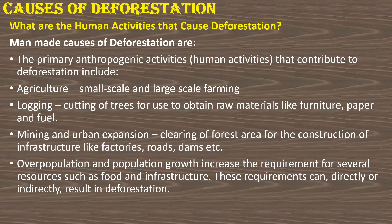What are the human activities that cause deforestation? The primary anthropogenic causes of deforestation include: agriculture — both small-scale and large-scale farming; logging — the cutting of trees to obtain raw materials like furniture, paper, and fuel; mining and urban expansion; clearing of forest areas for the construction of infrastructure like settlements, factories, roads, and dams. Overpopulation and population growth increase the requirement for resources such as food and infrastructure, which can directly or indirectly result in deforestation.